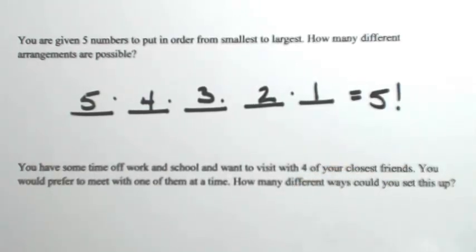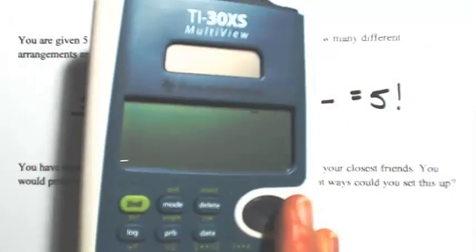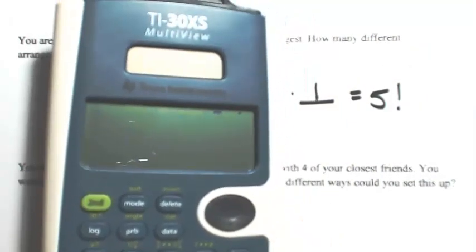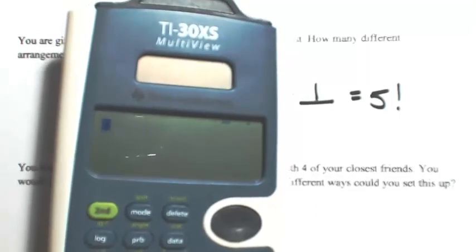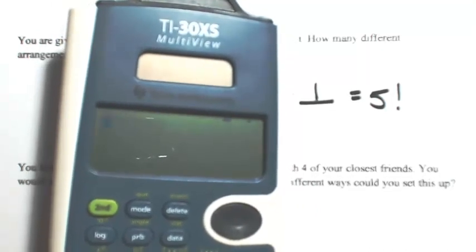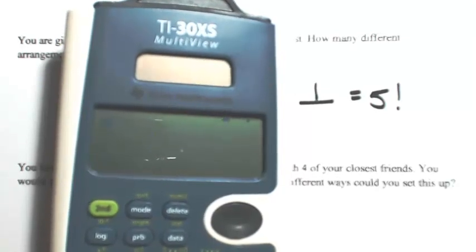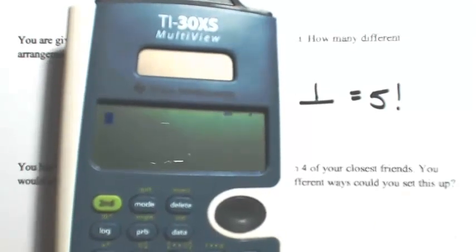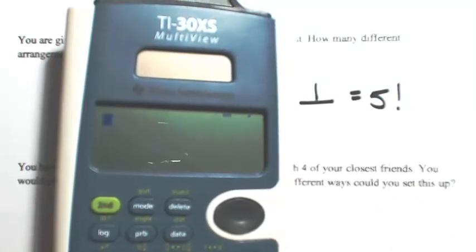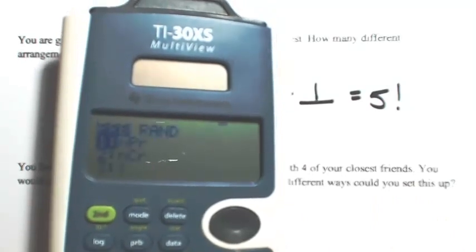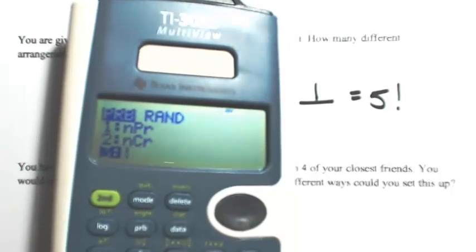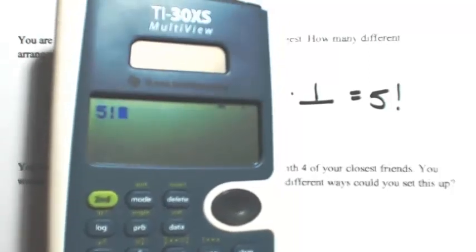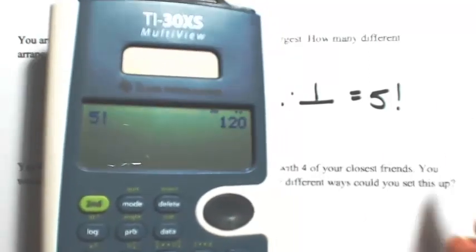On your calculator, you can do this a couple of ways. You can do five times four times three times two times one manually. Or look for a PRB button on your calculator. If you have a graphing calculator, hit Math and then look for PRB. It might have PRB right on it — hit five and then PRB for probability, and look for the exclamation mark symbol, which means factorial.